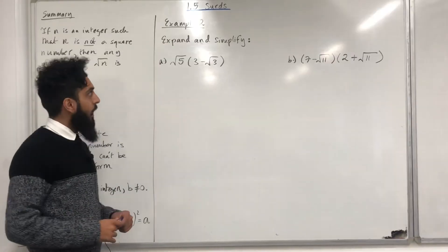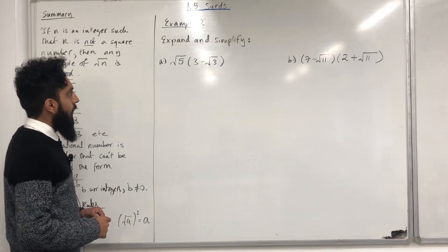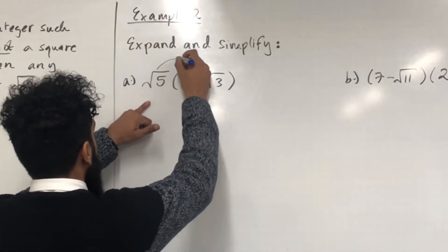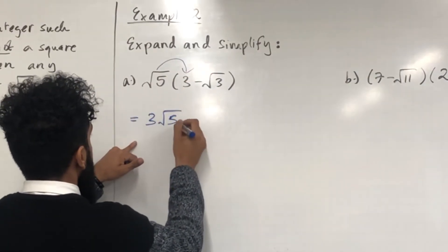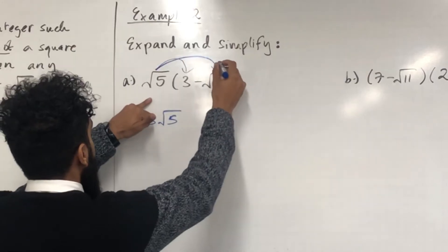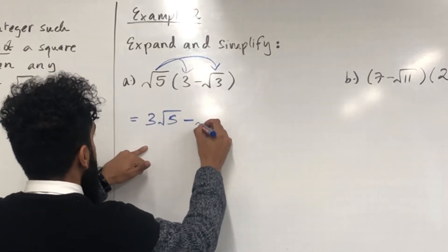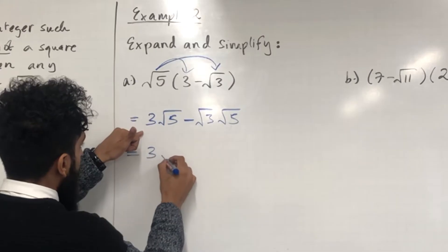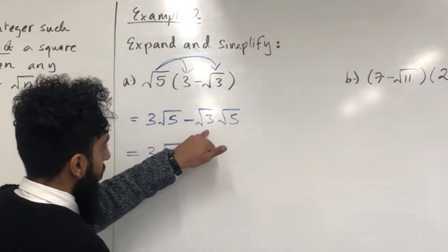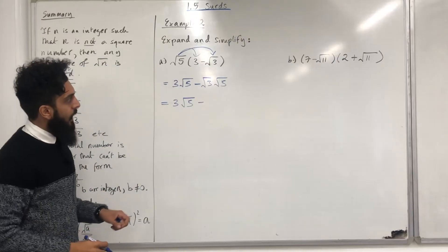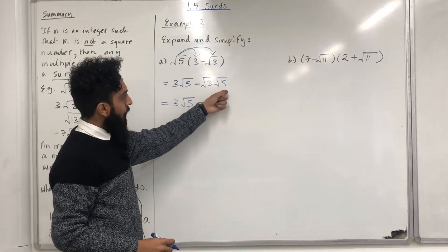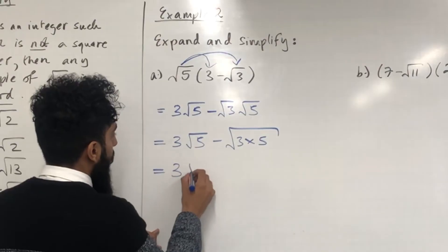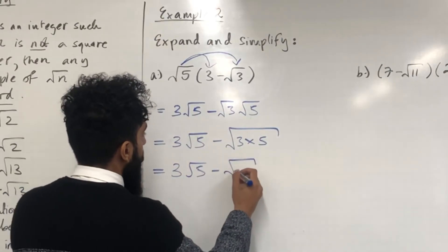Moving on to example number 2 — expand and simplify parts a and b. Starting with part a: square root of 5 multiplied by 3 is equal to 3 square root 5. Square root of 5 multiplied by negative square root 3: using the multiplication rule for surds, square root 3 multiplied by square root 5 can be written as square root of 15. So the answer is 3 square root 5 minus square root 15.